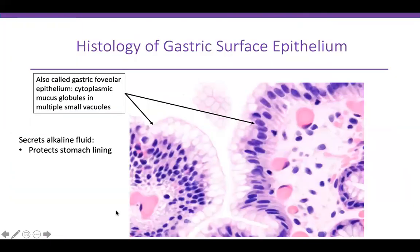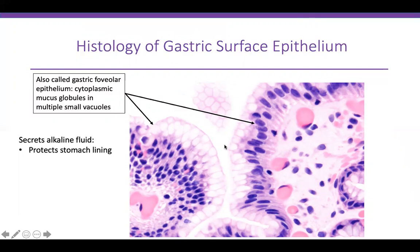Let's look at the histology of the gastric surface epithelium, also called gastric foveolar epithelium. It has cytoplasmic mucous globules in small vacuoles — multiple small vacuoles of mucin at the surface. This epithelium basically secretes alkaline fluid which protects the stomach lining from autodigestion.